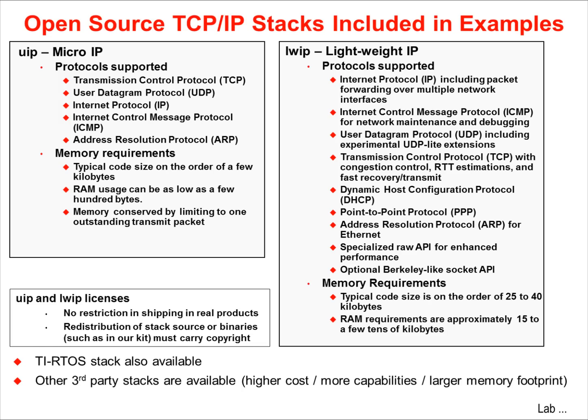Micro IP has a very small memory footprint and is used in the bootloader. It has an available web server, but the lack of DHCP forces using a static IP address. Lightweight IP is used in the example apps since it contains DHCP, Auto IP, and all protocols required for web server implementation. Both are offered under a BSD-like license.